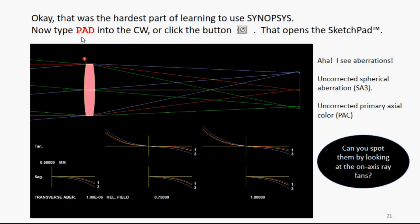Now type PAD in the command window, or click the PAD button. It opens the sketch pad. And, aha, I see aberrations. Can you see them? I see uncorrected spherical aberration. I see uncorrected primary axial color. Right there.